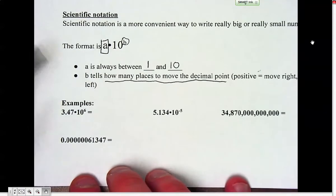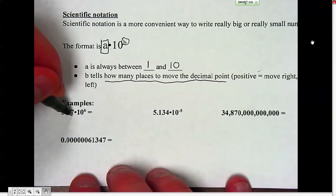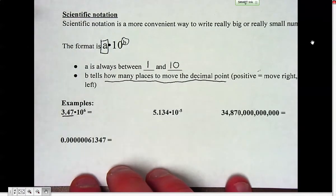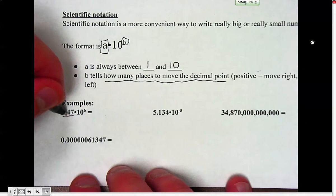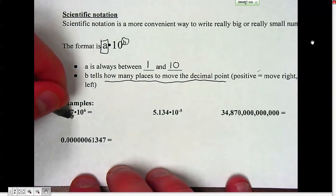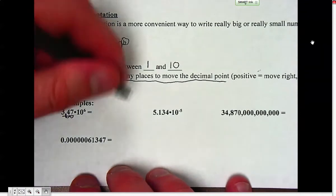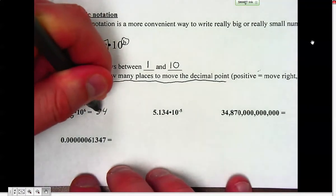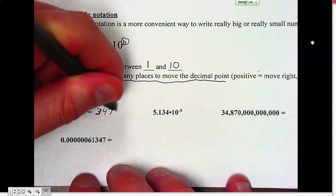When we look at our examples, 3.47—notice this number is between 1 and 10—times 10 to the 6th. I'm going to take that decimal point. 10 to the 6th is a million, so I'm going to move it 1, 2. When you run out of digits, you just start putting zeros at the end. I moved it two places, so now I have four places left to move, which means four zeros at the end.